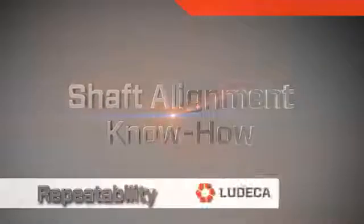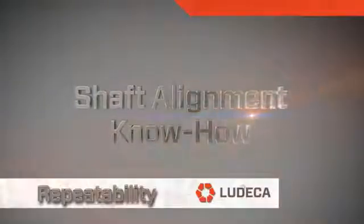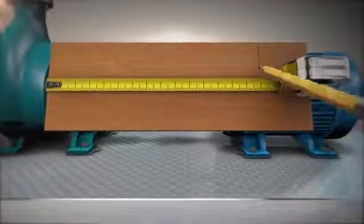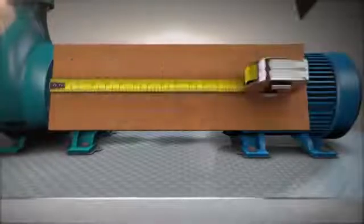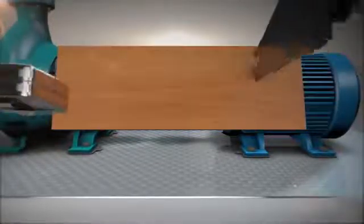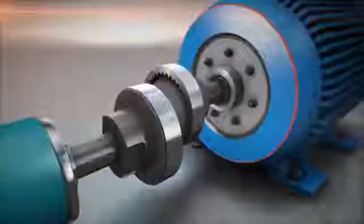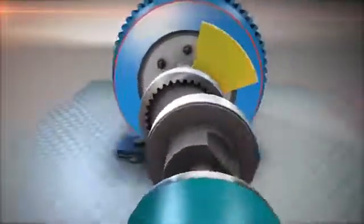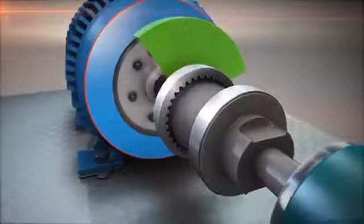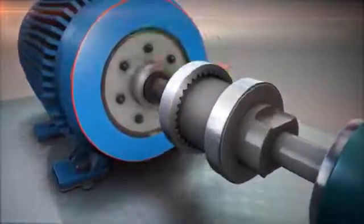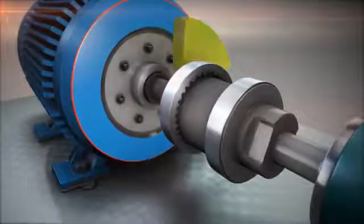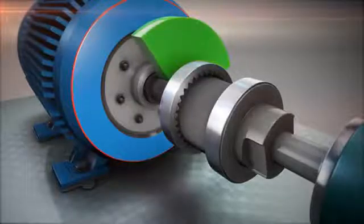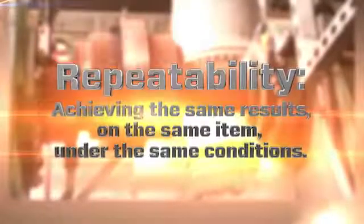Shaft alignment know-how. Repeatability. We have all heard the old carpenters saying, measure twice, cut once. When we start a shaft alignment measurement, we take two sets of readings with the same start and stop positions following the natural rotation of the machine. This way, we make sure that the needed alignment corrections are precise. We call this repeatability. It means achieving the identical measurement results in the same way, on the same machine, under the same conditions.